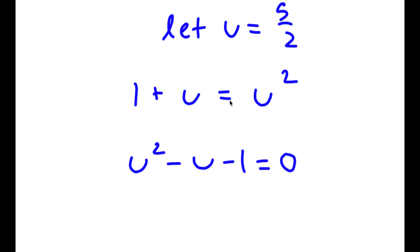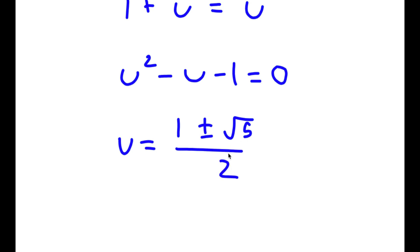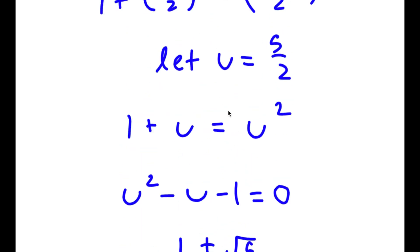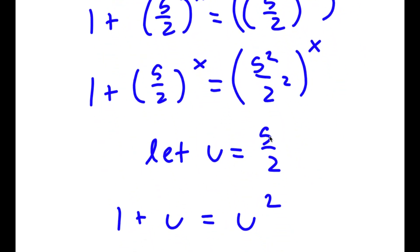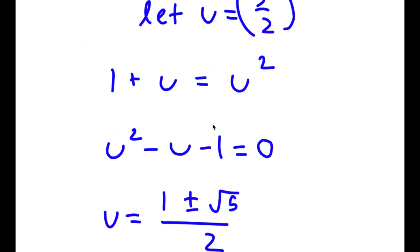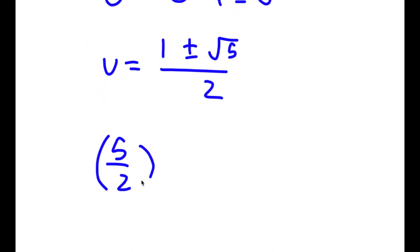I'm going to use the quadratic formula to solve this. Using the quadratic formula, you should get u is equal to 1 plus or minus the square root of 5, all over 2. Now remember we said u is equal to (5/2) to the power of x. So this means that (5/2) to the power of x is equal to (1 plus or minus the square root of 5) over 2.